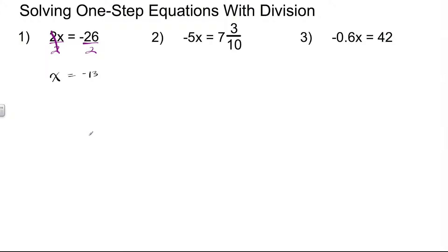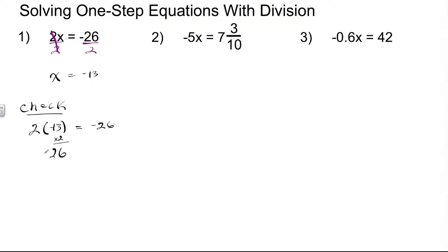You should be able to do that in your head; if not, you can use a calculator or long division. To check our answer, we substitute our solution, negative 13, into x in the original equation. So we have 2 times negative 13 is equal to negative 26. 2 times 13 is 26, and a positive times a negative is always negative, giving us negative 26. Our work checks out for that first problem. We used the division property to divide each side by 2.